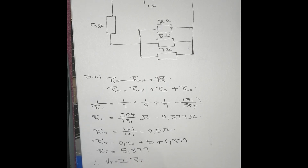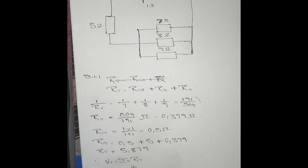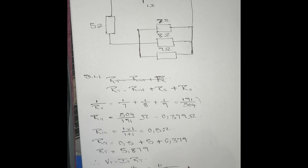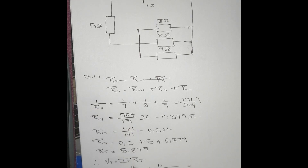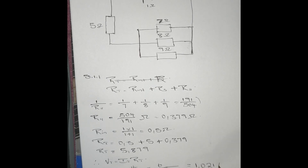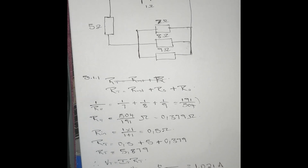Therefore V_T = I_T × R_T, making I_T the subject: I_T = V_T / R_T = 6 / 8.139, which gives us 0.737 amps.